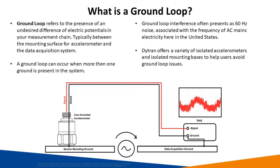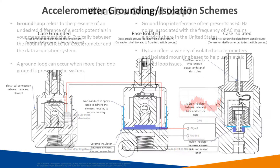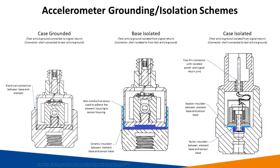Ground loop interference will often present itself as 60 Hz noise on your sensor data, associated with the frequency of AC mains power here in the United States. DITRAN offers three types of grounding schemes, first being case grounded accelerometers. These are accelerometers that are grounded to the test article through the housing of the sensor. These sensors are typically smaller and more affordable than their associated isolated counterparts. The downside being that case grounded sensors can be affected by ground loop interference.